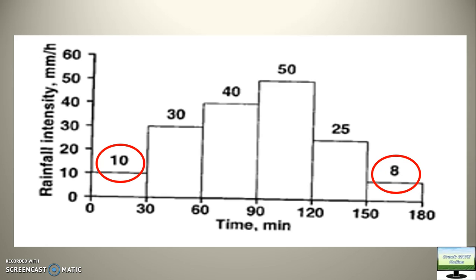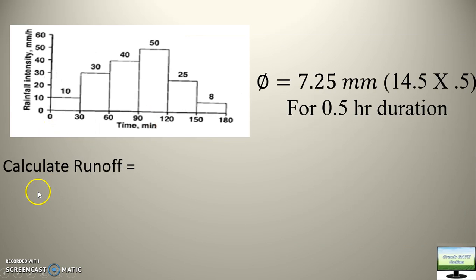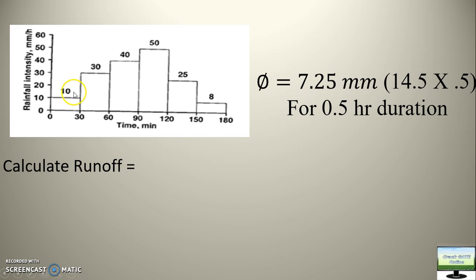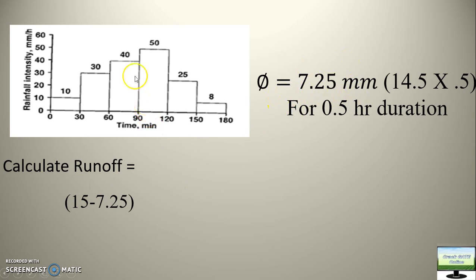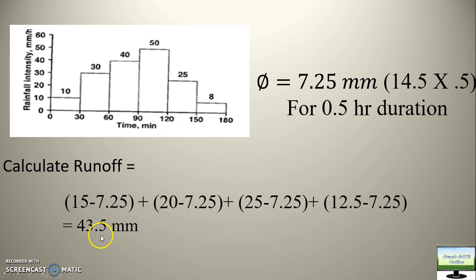Now it will be more clear. The value of phi index was 14.5 mm per hour, so for half an hour, what will be the value of phi? That is 7.25 mm. So 7.25 mm of water will be directly absorbed in half an hour. Here, how much is the water quantity? 5 mm. For half an hour, the water quantity is 5 mm. Will there be any water to contribute to runoff? No — because the complete water will be absorbed, as it is less than 7.25 mm. For the remaining intervals (1, 2, 3, 4), we will get some effective runoff. In half an hour, the runoff value is 15 minus 7.25. Similarly, we calculate for all three remaining intervals. So you get 43.5 mm.